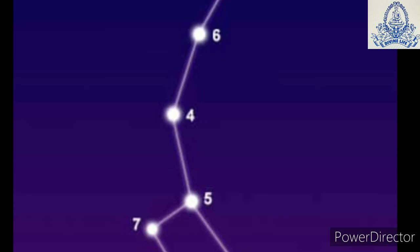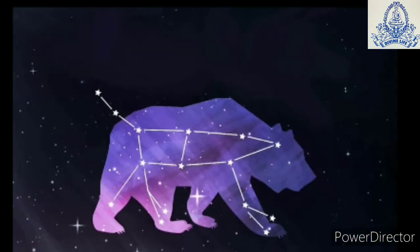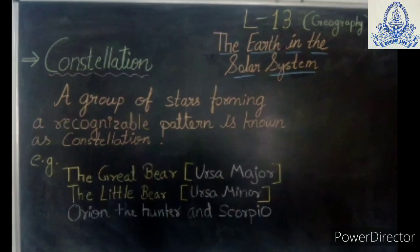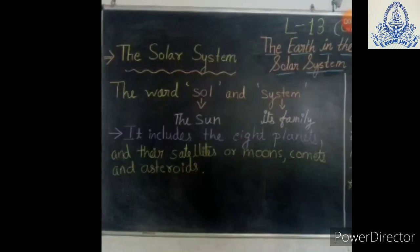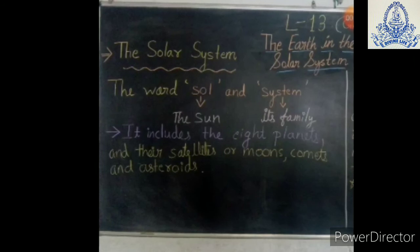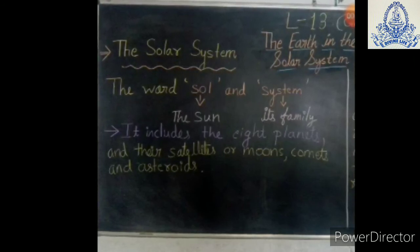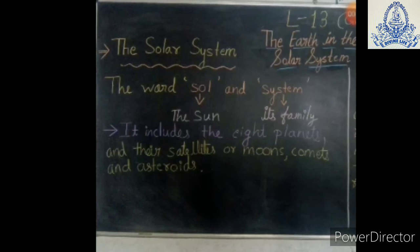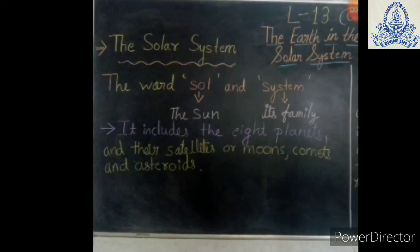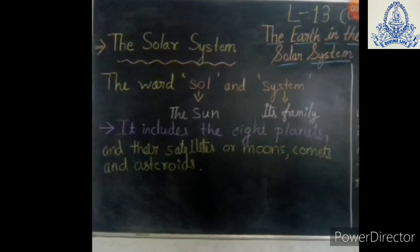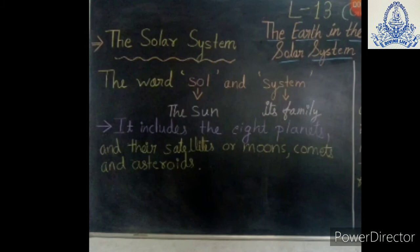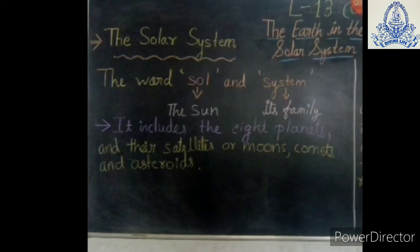The next topic is the solar system. The word 'solar' means sun, and 'system' means its family. The solar system is the name given to the sun and its eight planets. The solar system includes the planets, their satellites, meteors, comets, and asteroids.